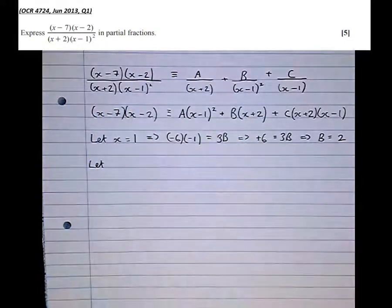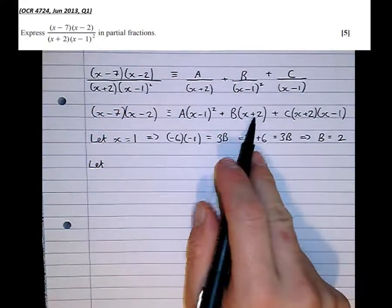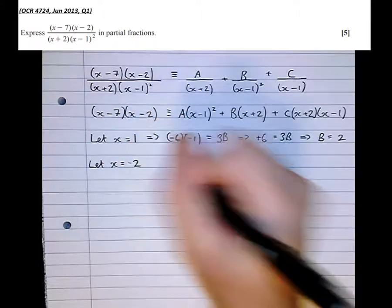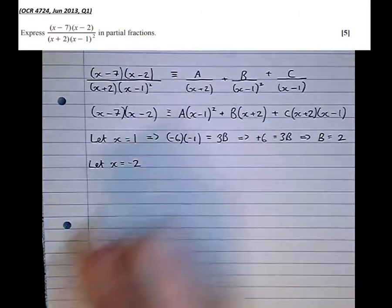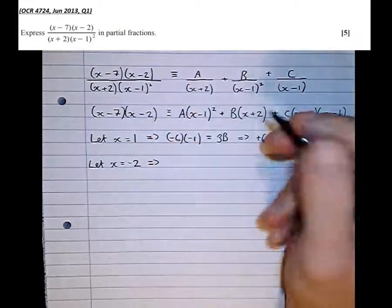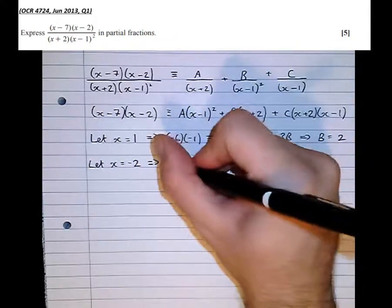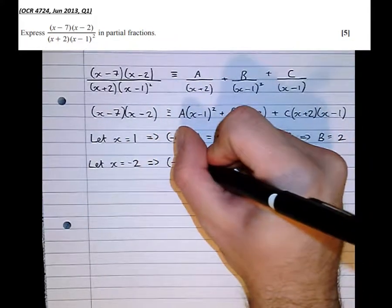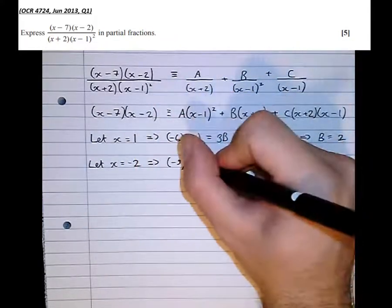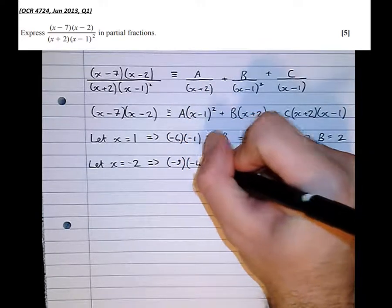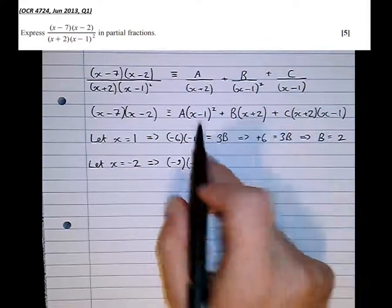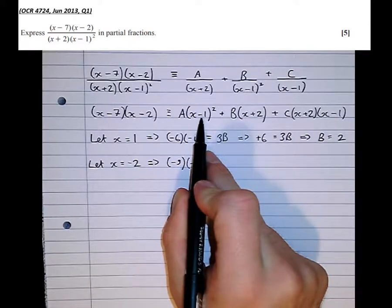So the next tactical value, I can see if I sub in minus 2, then this here is going to disappear. So that means that, okay, minus 2 minus 7 is minus 9. Minus 2 minus 2 is minus 4.